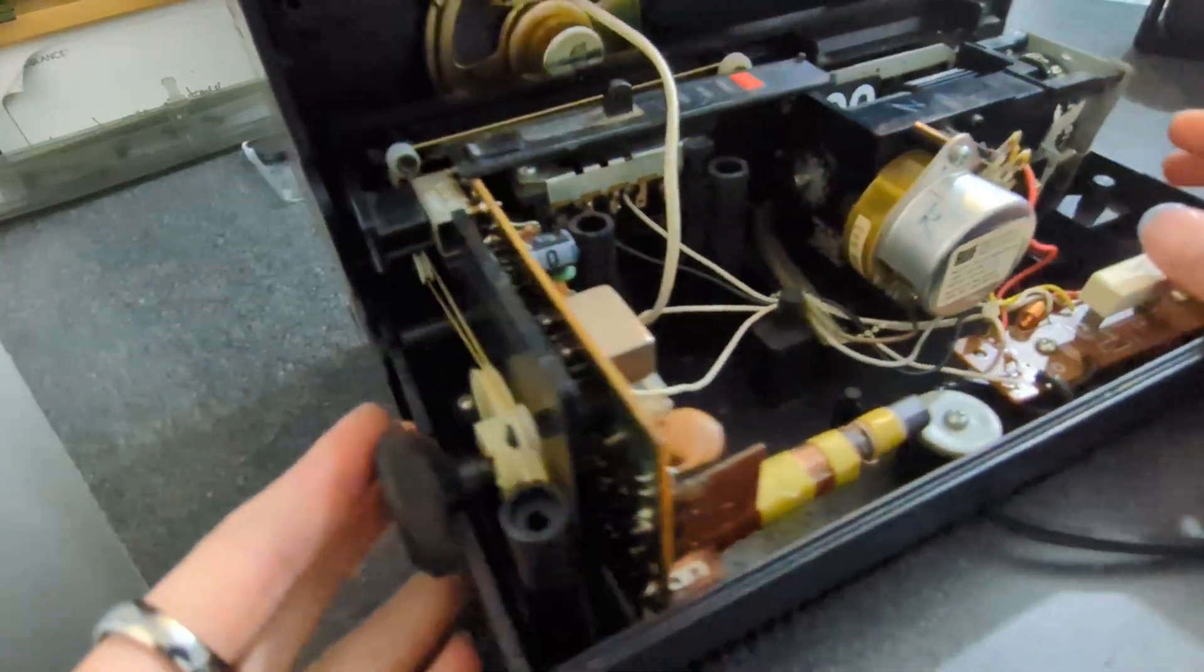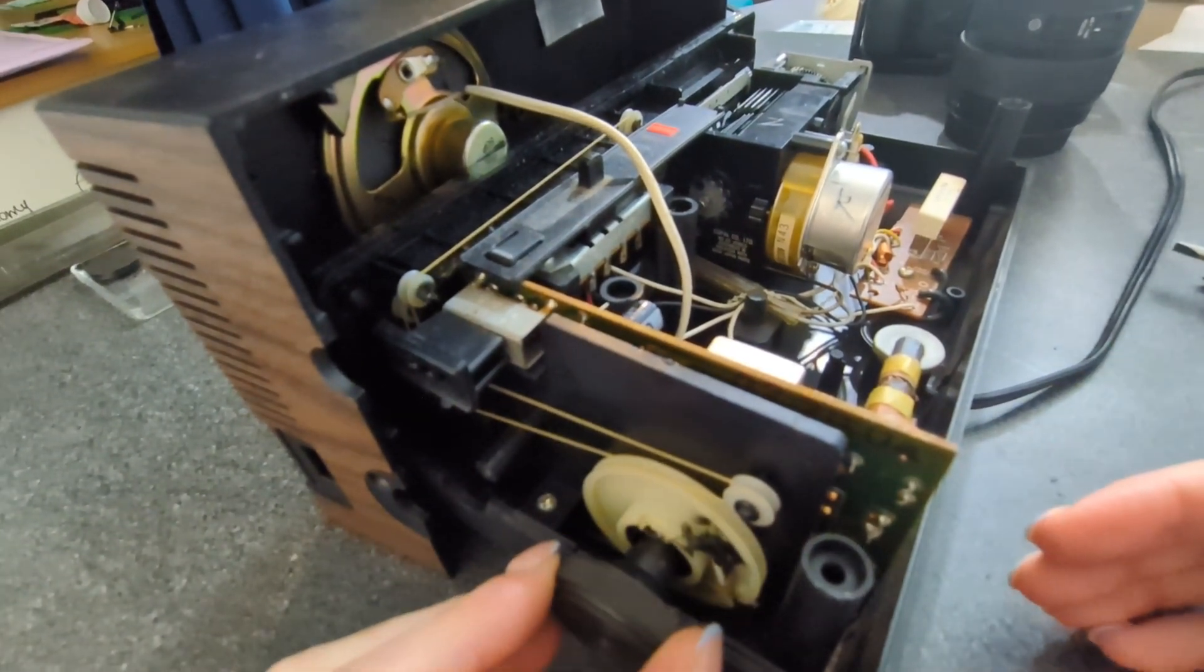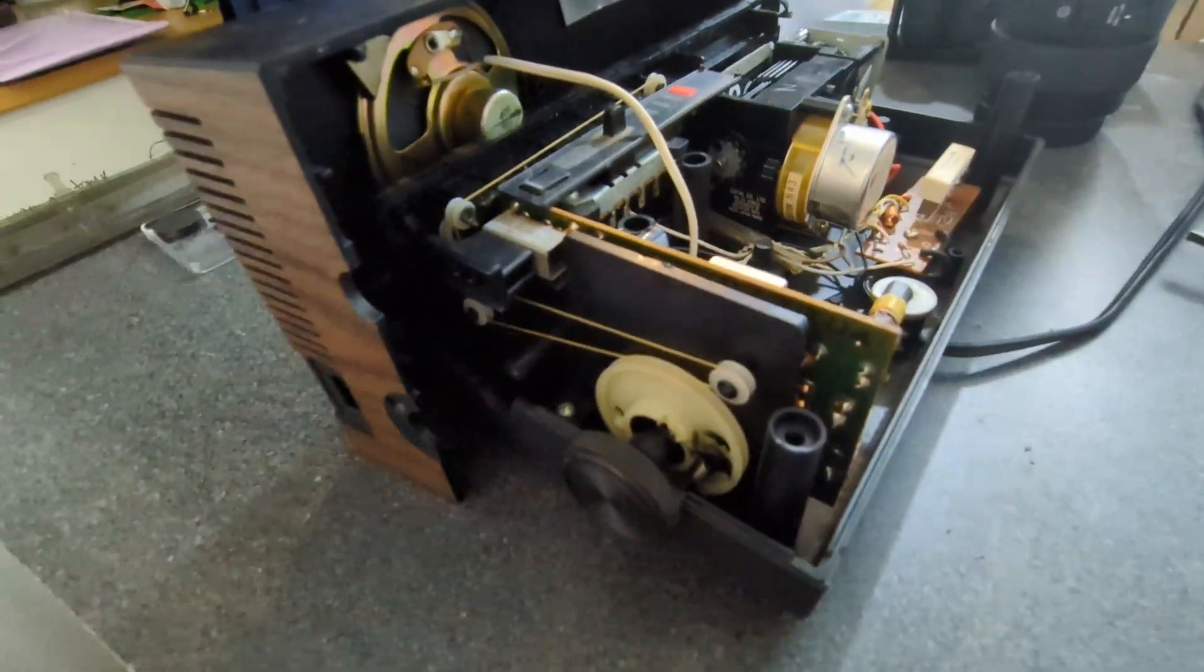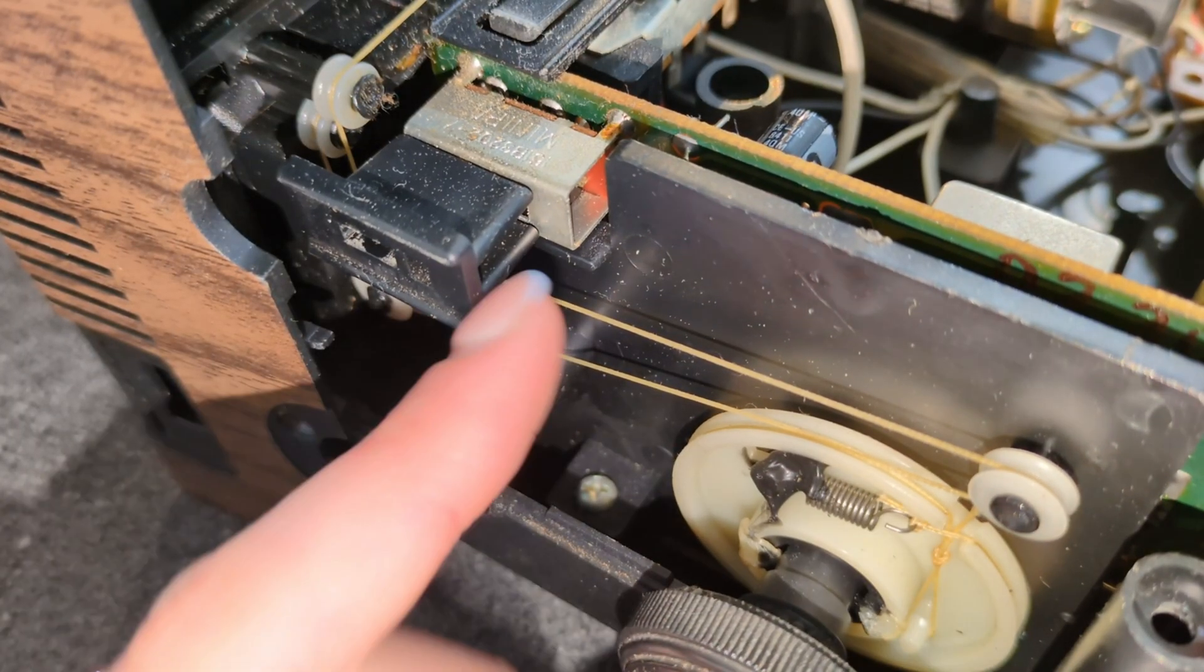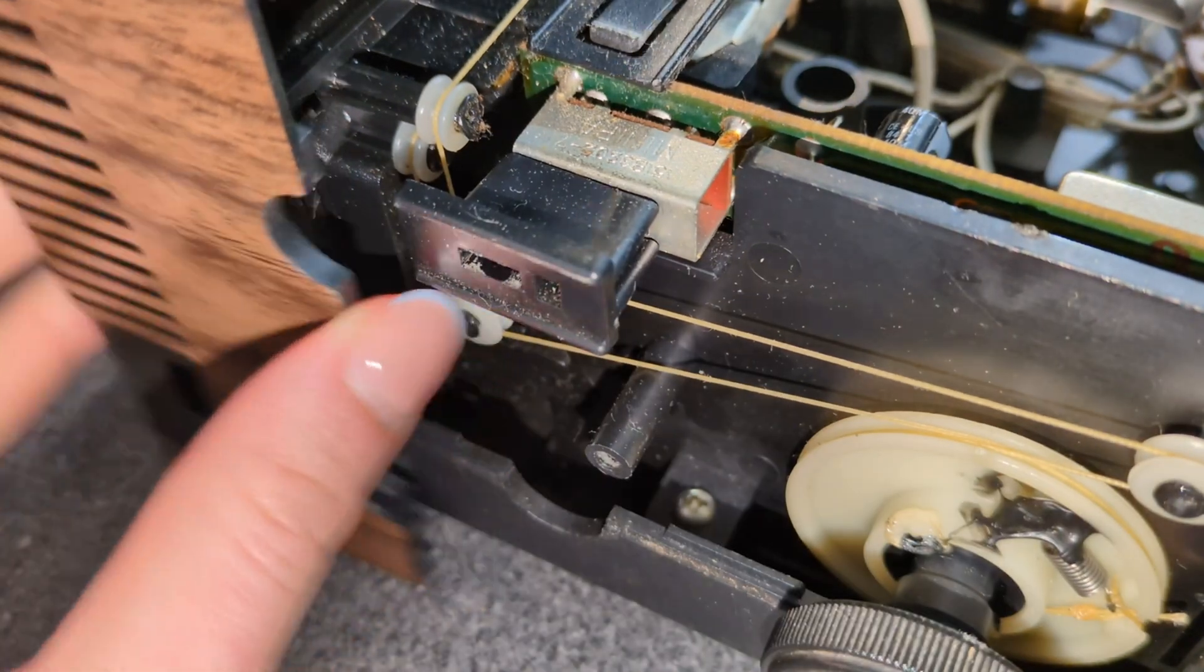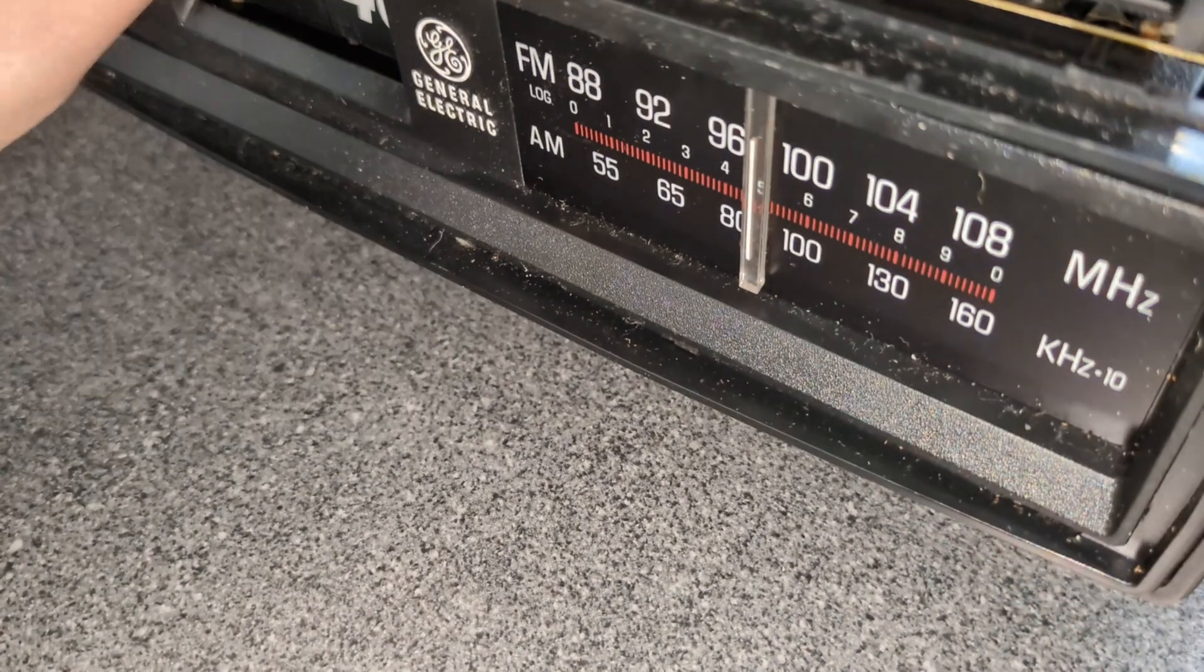The craziest part is this cable-driven system for selecting which radio station you're on. We've got the cable pretension with a spring. It wraps around several pulleys around the top and it moves this plastic bar.